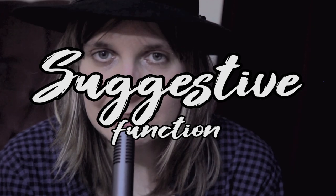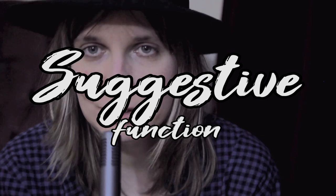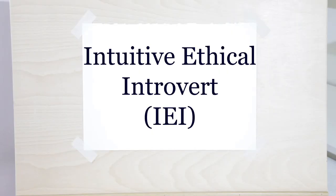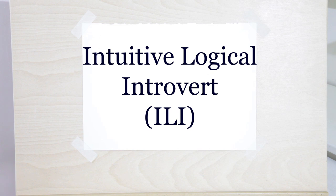The suggestive function is weak and valid — it informs the worldview. The aspect in the suggestive function is what the type is hoping to receive from others. The aspect in the suggestive function corresponds to the aspect in the lead function of the type's dual. The two types that have suggestive SE are the intuitive ethical introvert, IEI, and the intuitive logical introvert, ILI.